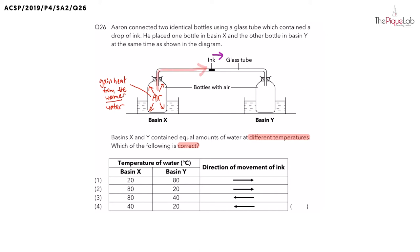But in order for the ink to move towards the right, what do you think must happen to the air inside of Basin Y? The air must be able to contract. And in order for the air to contract, this means the air is going to lose heat. And what is it losing heat to? The air is losing heat to the water in Basin Y. But this time, the water is going to be cooler. So, let's write that down.